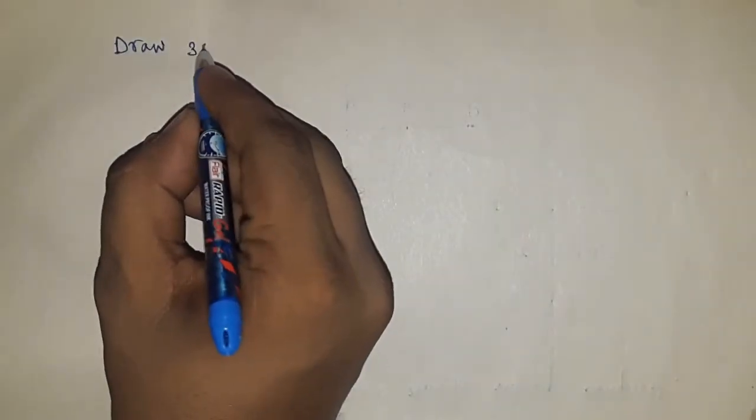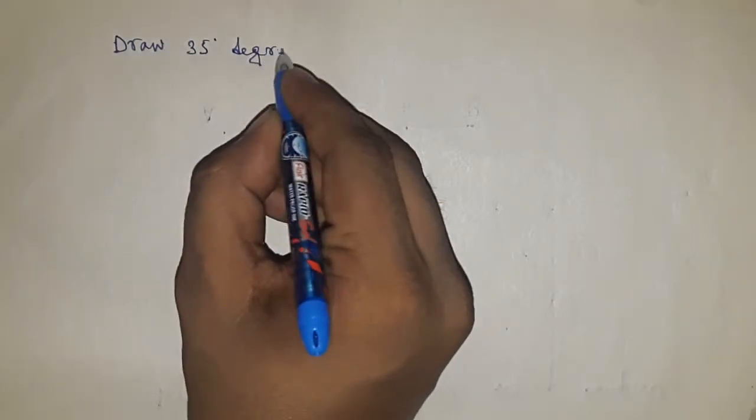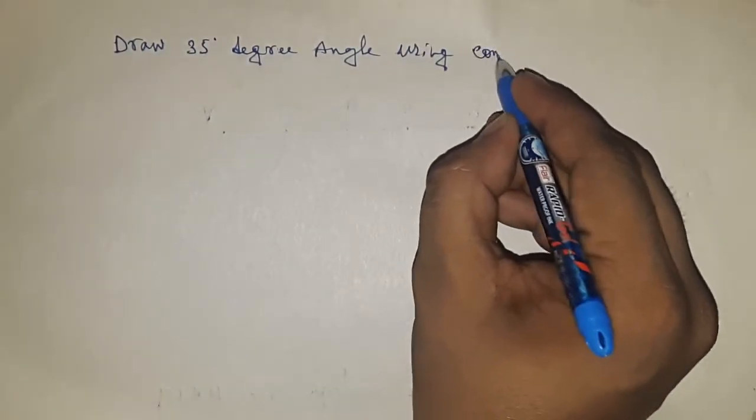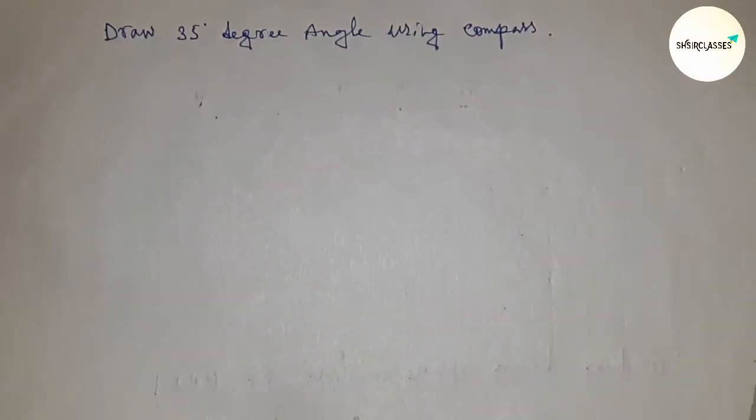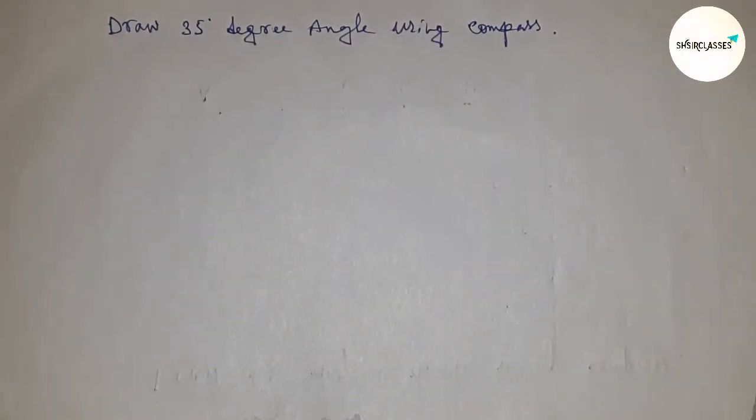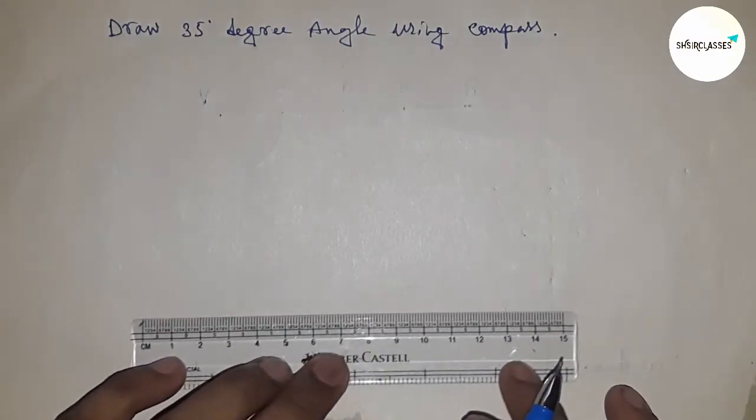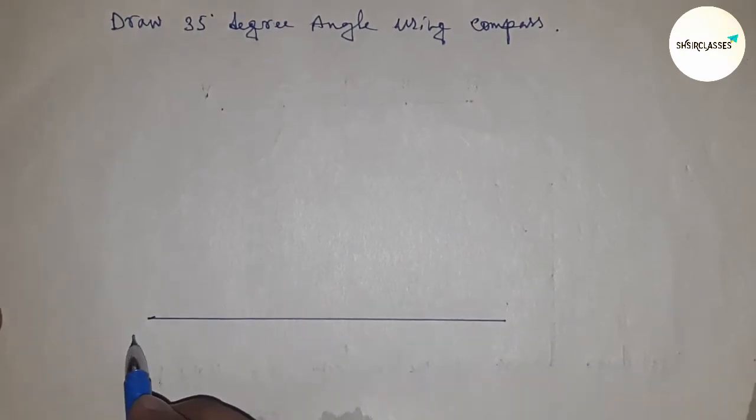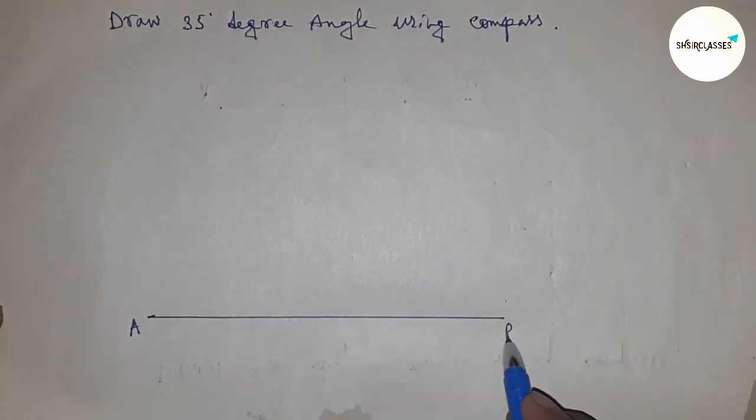Hello students, welcome to SS3 classes. Today we're talking about the construction of a 35-degree angle using compass. Before starting the video, I have one request: please subscribe to the channel and press the bell icon for future video notifications. First of all, draw a line of any length. Mark this end as point A and this end as point B.